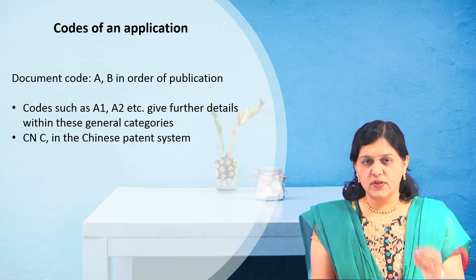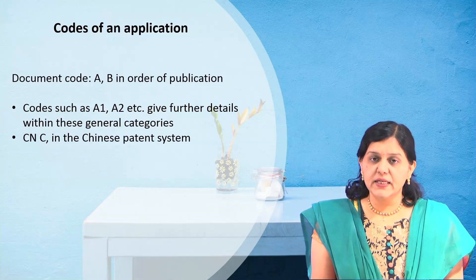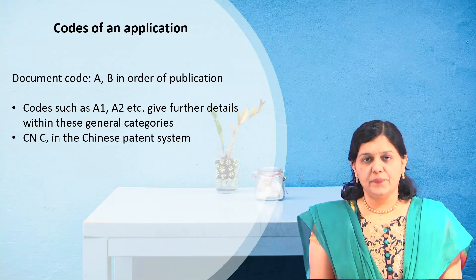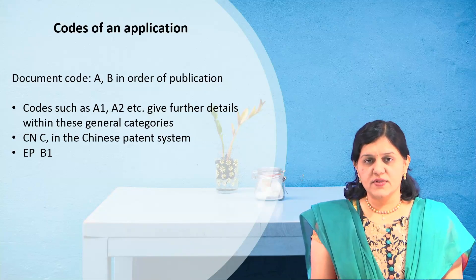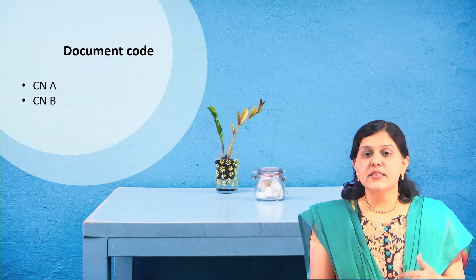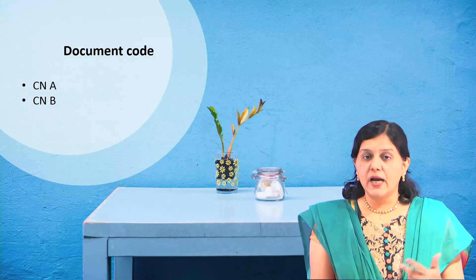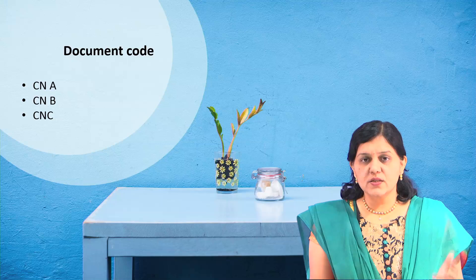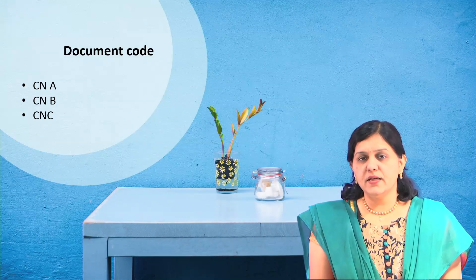In China, CN is for the Chinese patent system. Here, C means the patent is granted, so a code like CNC indicates a granted Chinese patent. CNA is an unexamined application open to public inspection, CNB is an examined application now open for public inspection, and CNC is a granted patent. These codes are applied according to widely accepted WIPO standards.